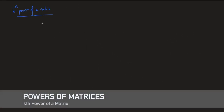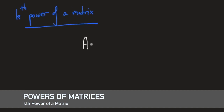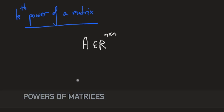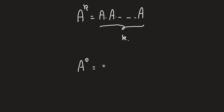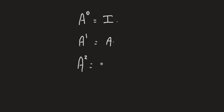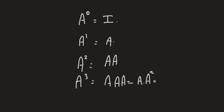Let's define the kth power of a matrix. Given a square matrix, we can define the kth power. A to the power zero is, by convention, the identity; A to the power one is A itself; A squared is A times A; A cubed is A times A times A, which is also A times A squared, or A squared times A, and so on.